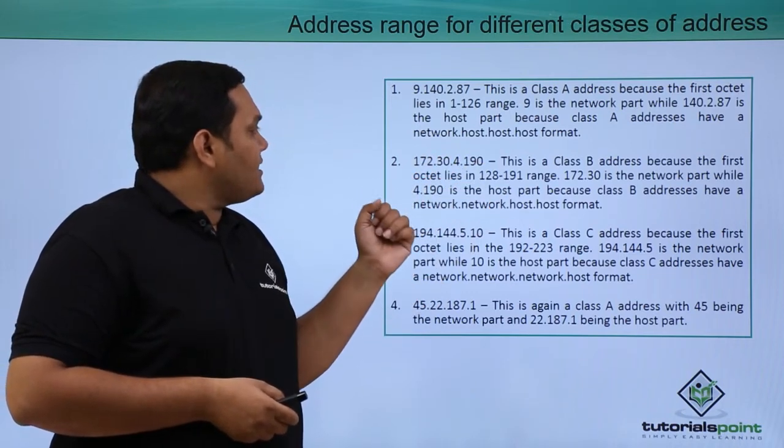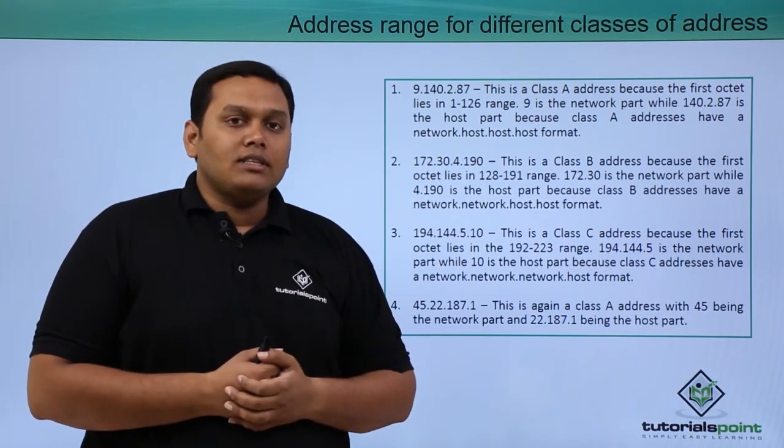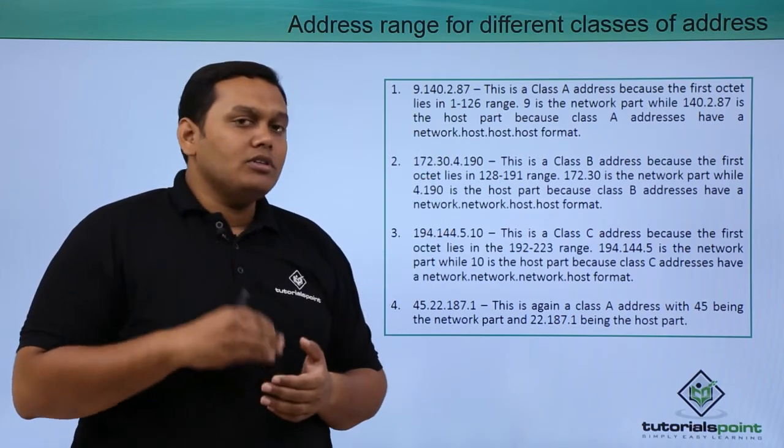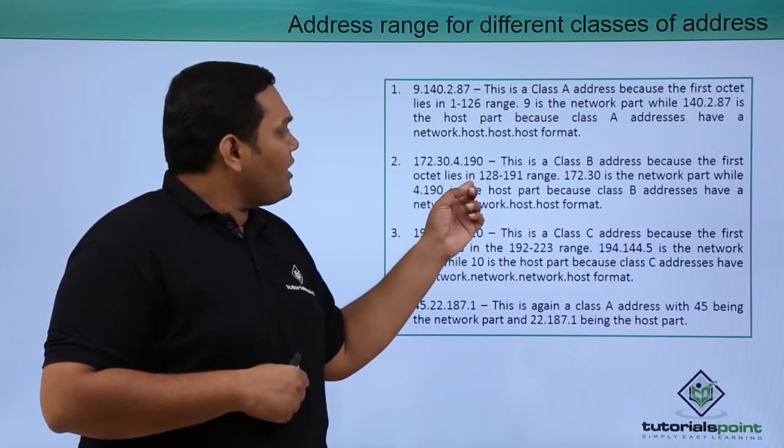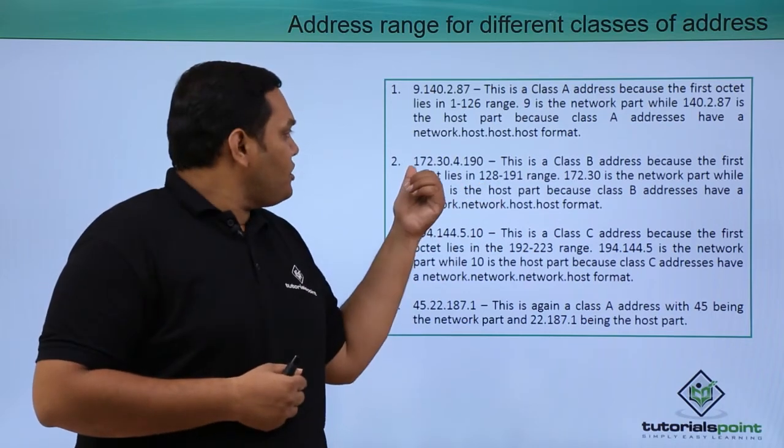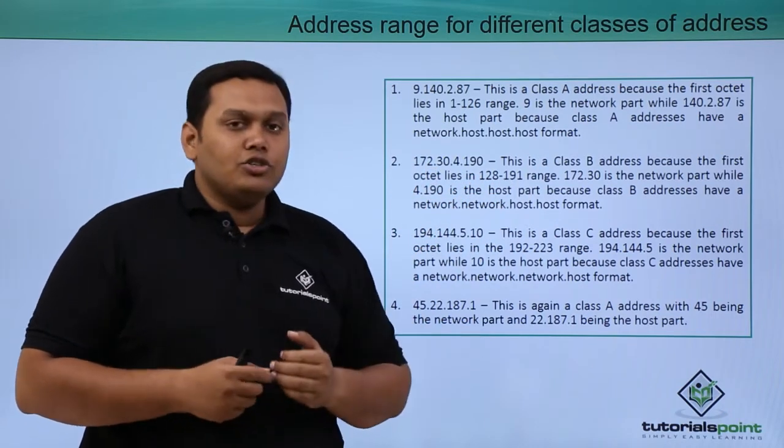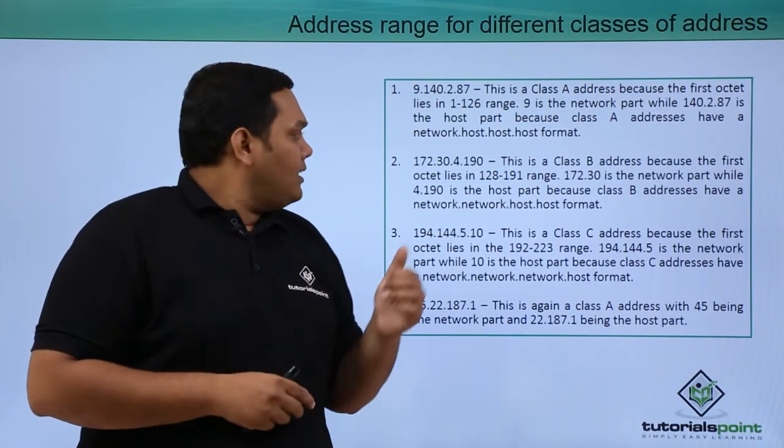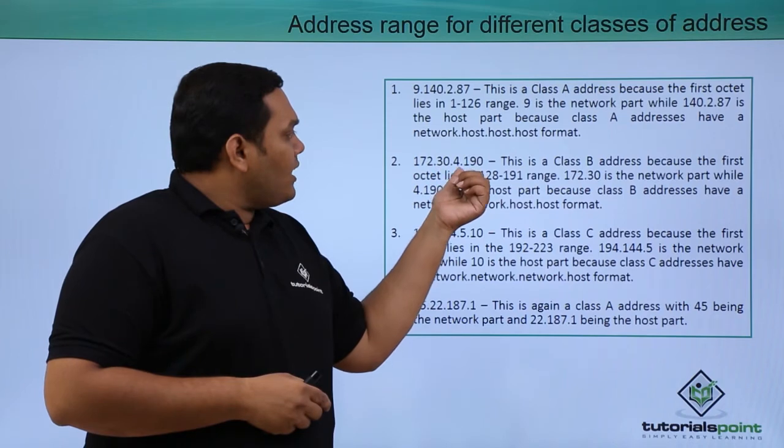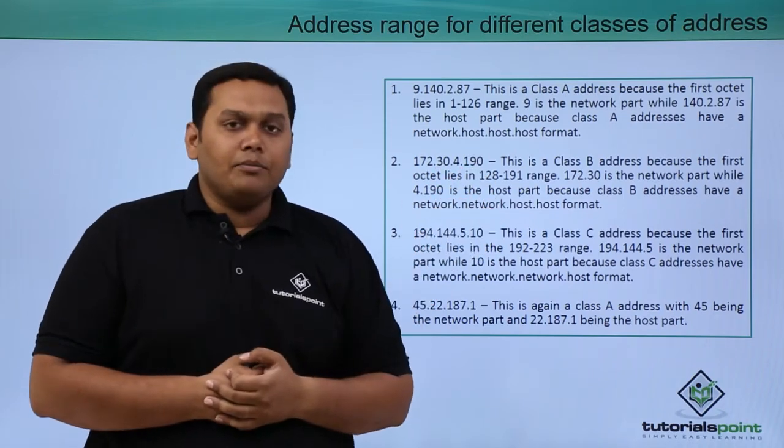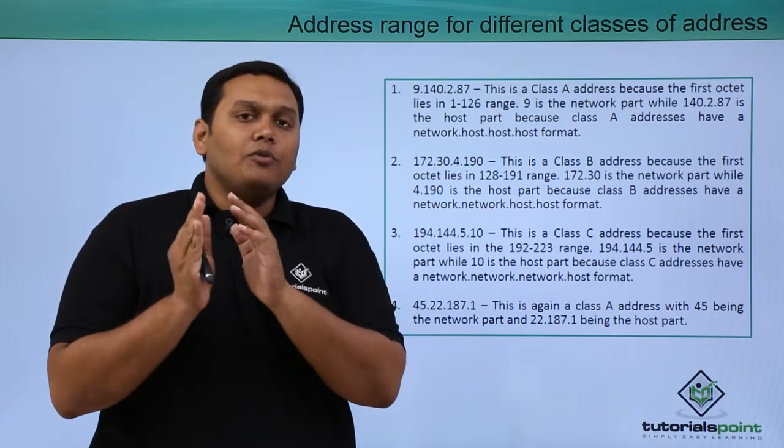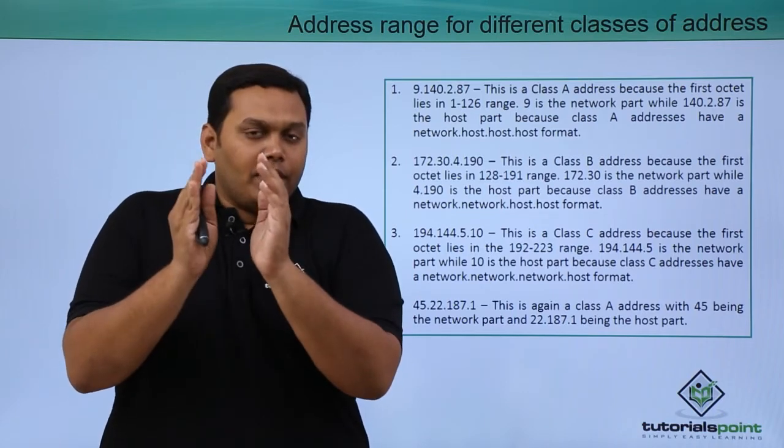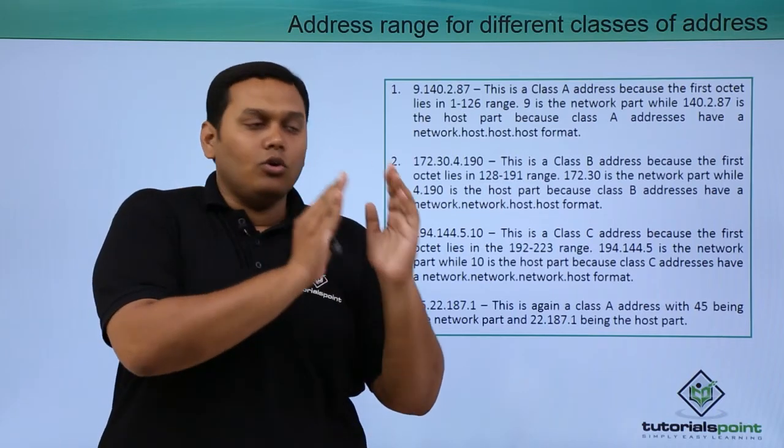The second example: 172.30.4.190. This is class B because class B varies from 128 to 191 range. So 172 falls under this range. 172.30 is the network component and 4.190 is the host part because it comes under class B, which is in the format network.network.host.host.